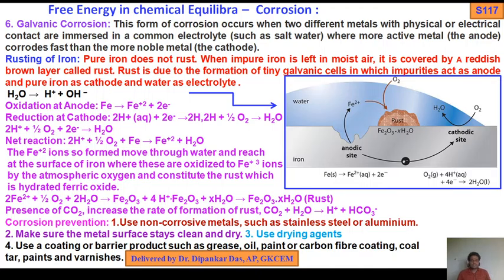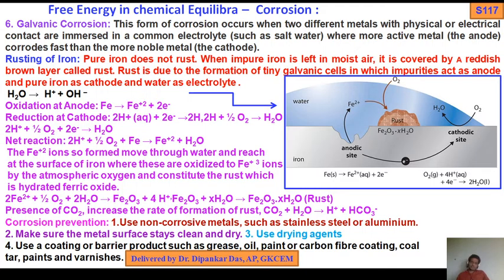Presence of carbon dioxide increases the rate of formation of rust. Carbon dioxide reacts with water to give carbonic acid H2CO3, which dissociates to give H⁺ + HCO3⁻, thereby increasing acidity and accelerating corrosion.